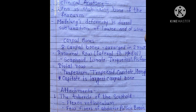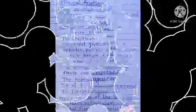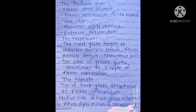For attachments of the carpal bones: the tubercle of the scaphoid gives attachment to the flexor retinaculum and a few fibers of abductor pollicis brevis. The pisiform gives attachment to flexor carpi ulnaris, flexor retinaculum and its superficial slip, abductor digiti minimi, and extensor retinaculum. The trapezium crest gives origin to abductor pollicis brevis, flexor pollicis brevis, and opponens pollicis. The hook of hamate gives attachment to the flexor retinaculum; the medial side of the hook gives attachment to flexor digiti minimi and opponens digiti minimi.